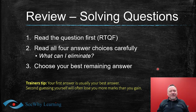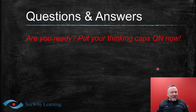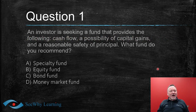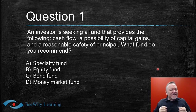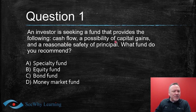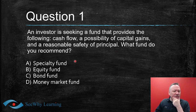Are you ready for some questions? Let's put our thinking hats on. Question number one: an investor is seeking a fund that provides cash flow, a possibility of capital gains, and a reasonable safety of principle. What fund do you recommend? The choices are: A — specialty fund, B — equity fund, C — bond fund, D — money market fund.